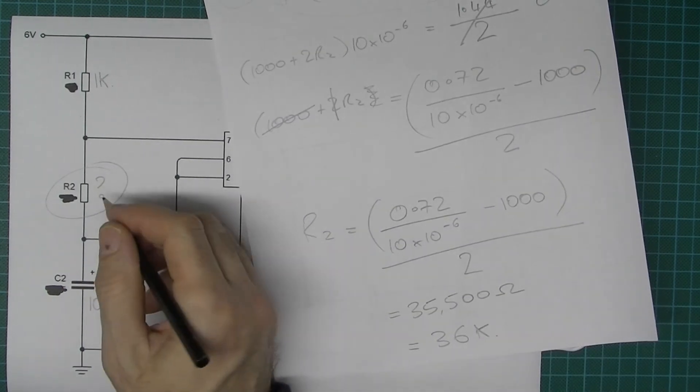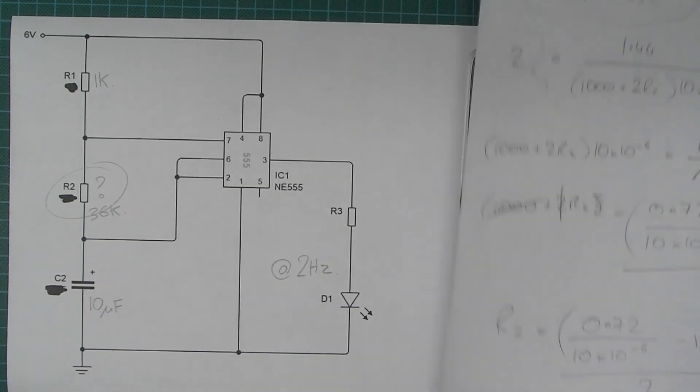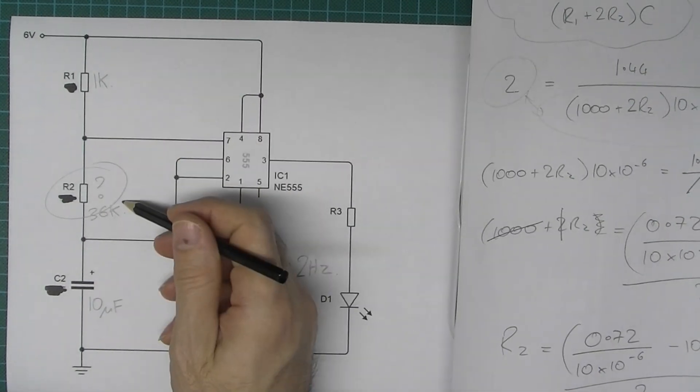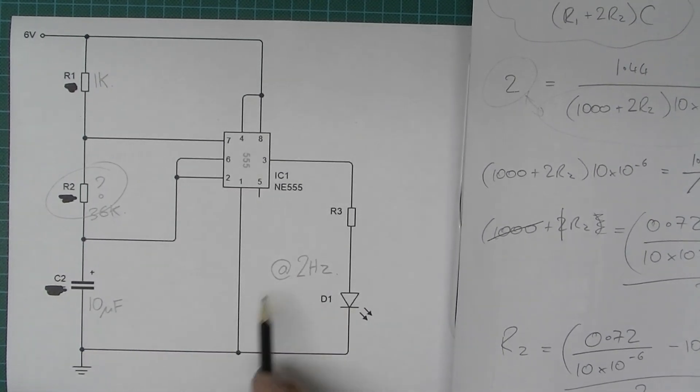Okay, so let's use a 36k resistor there. And then so with the 1k and the 36k and the 10 microfarad you'll have a frequency of approximately 2 hertz.